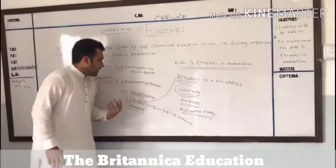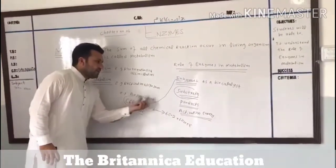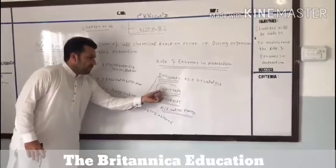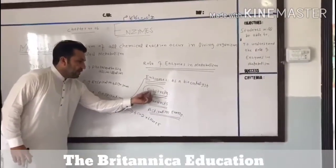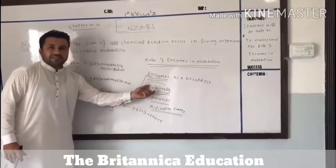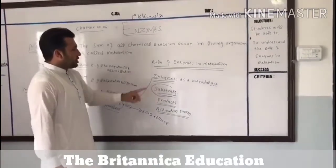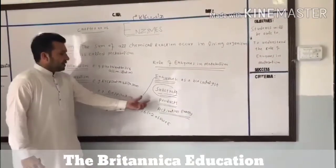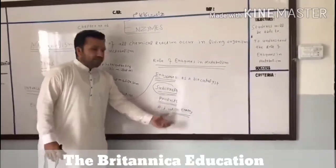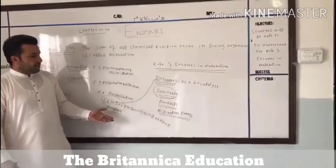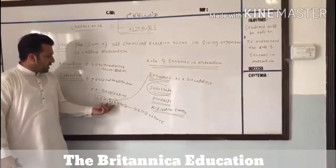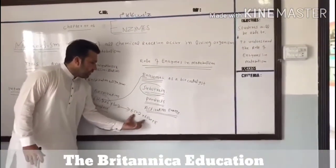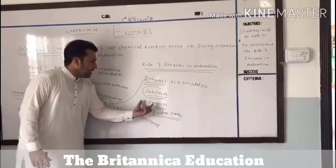The molecule that an enzyme acts upon is called the substrate, for example a glucose molecule. In an enzymatic reaction, the substrate molecules are changed into different molecules which are called products.